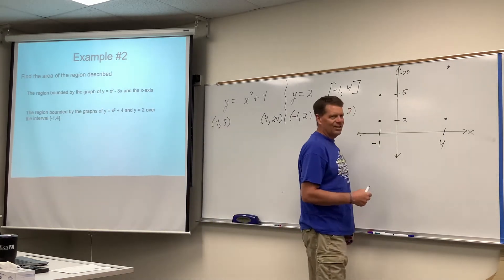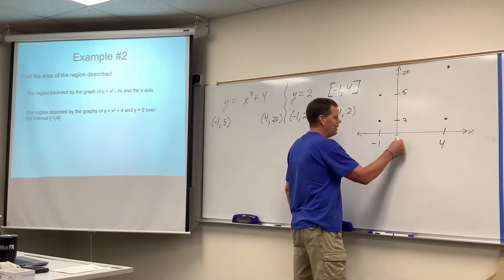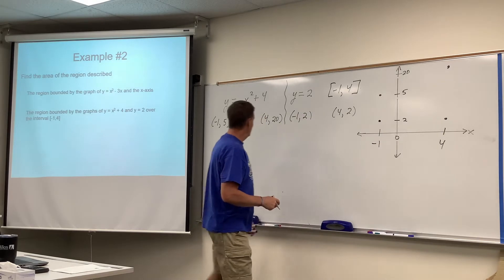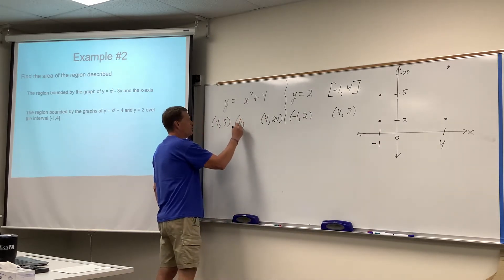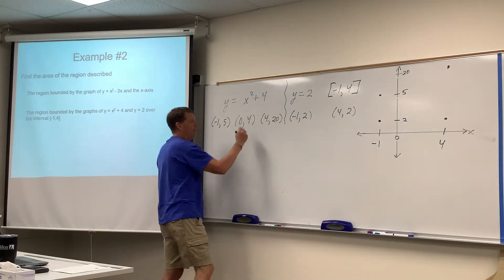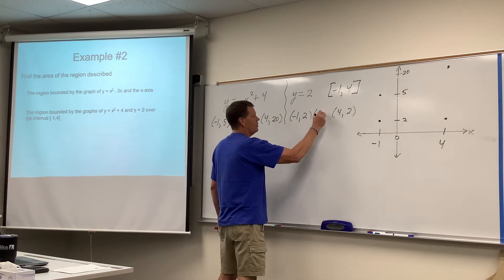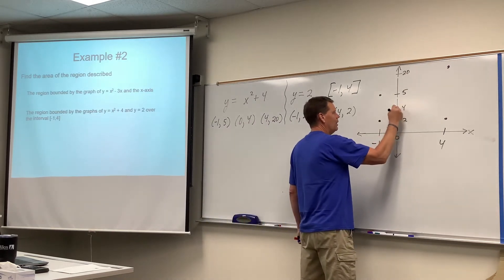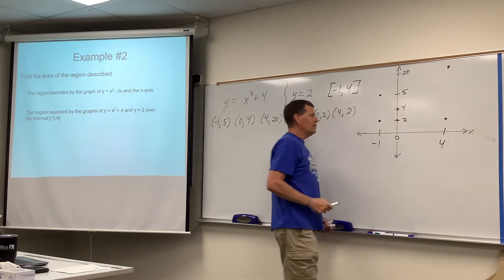I don't really see a need to test a number, but I guess I will anyway. If you picked a number in the middle there between the two, like zero, and plugged it into both, this one's going to give you four, and this one's going to give you two. All right? So again, one of the graphs comes up here at four. The other one comes at two. Here's the idea.